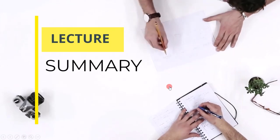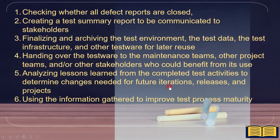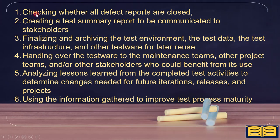Let's now summarize all the important points we discussed. The six major activities of test closure are: checking whether all defect reports are closed; creating a test summary report to be communicated to stakeholders; finalizing and archiving the test environment, the test data, the test infrastructure, and other testware for later reuse; handing over the testware to the maintenance teams, other project teams, and other stakeholders; analyzing lessons learned from the completed test activities to determine changes needed for future iterations, releases, and projects; and using the information gathered to improve test process maturity.